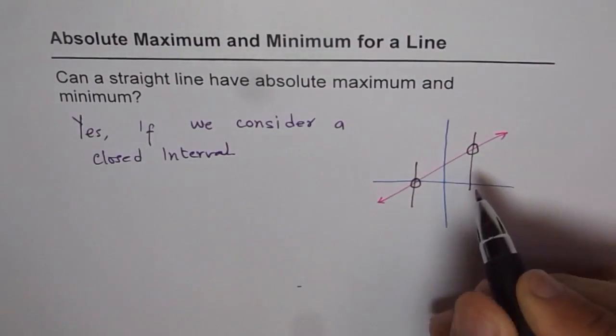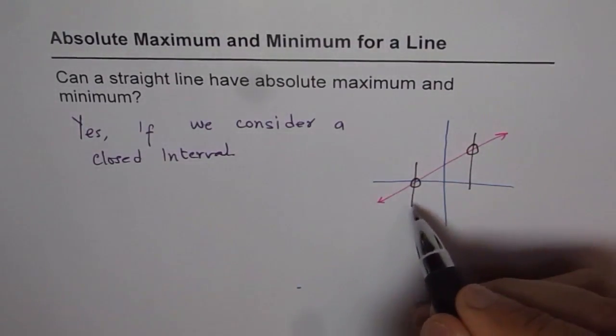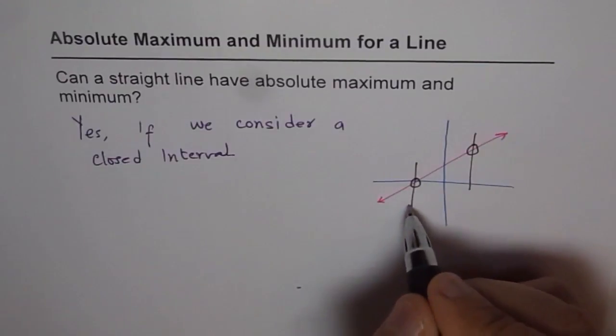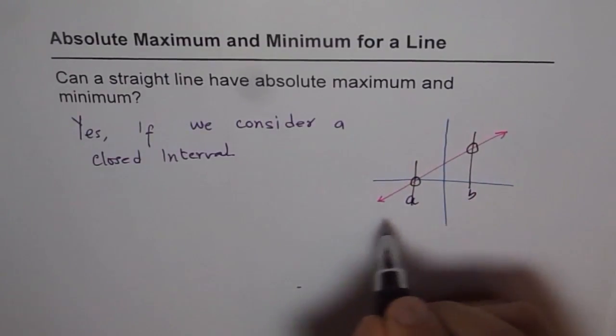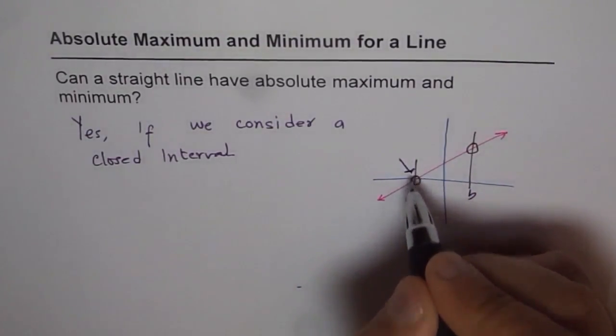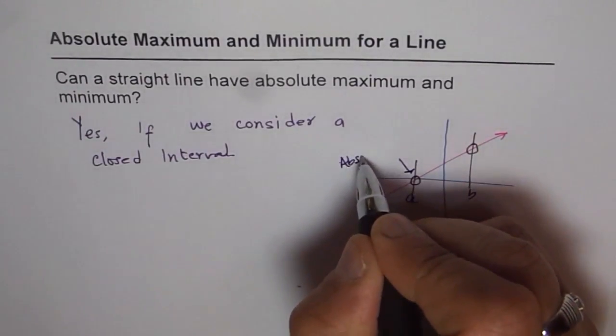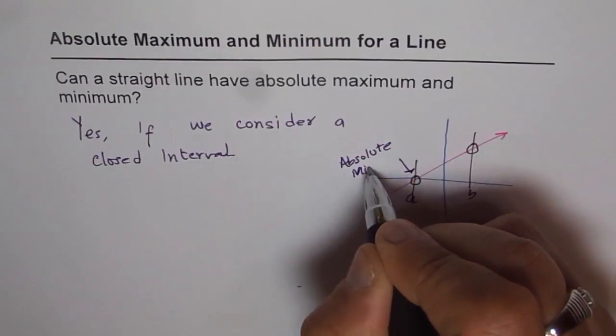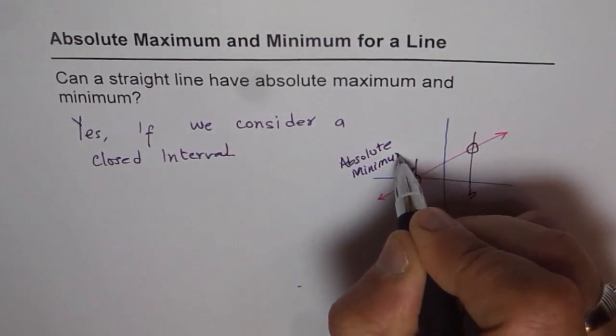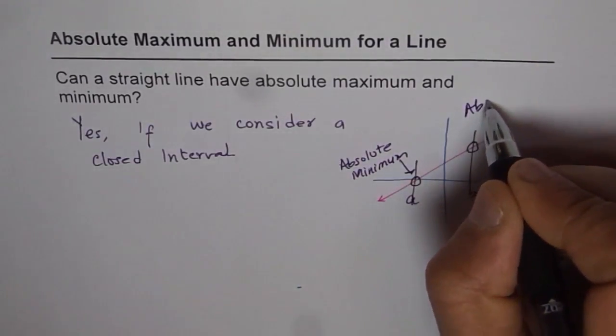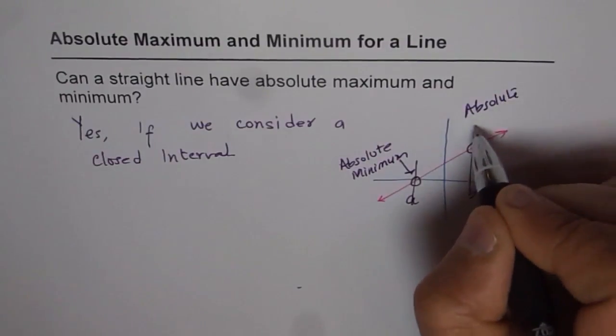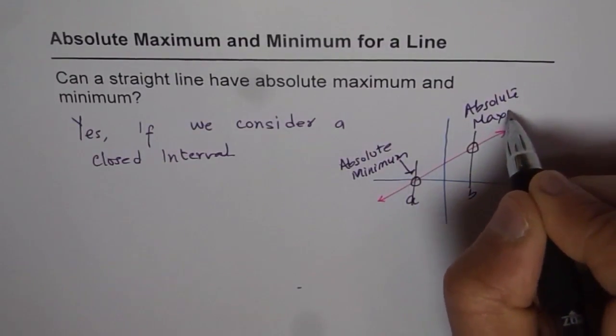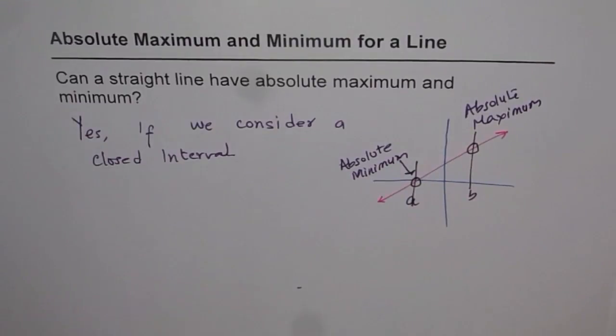That is like looking at a line cut off. We are just considering a portion of it. If the line is from a to b, in that case we have here absolute minimum and there absolute maximum. Do you see that? So that is possible.